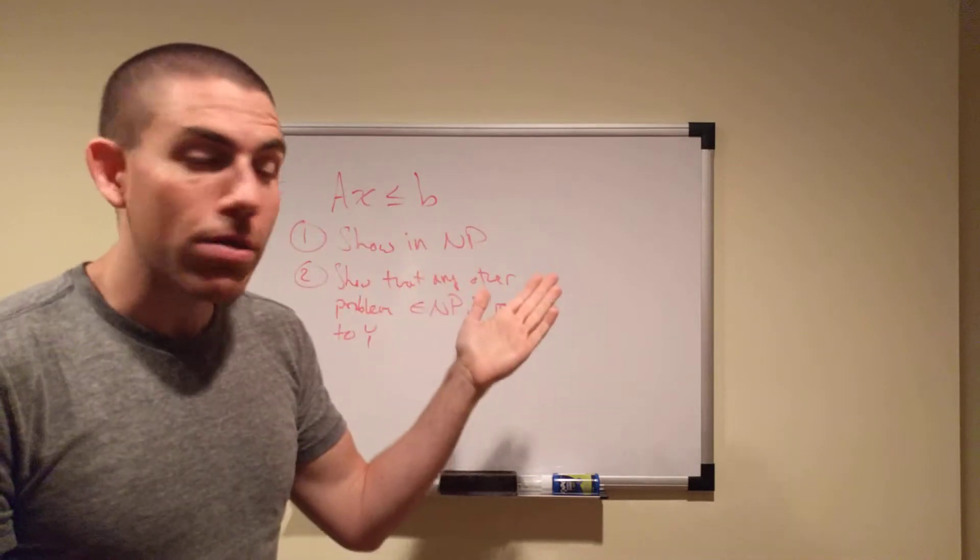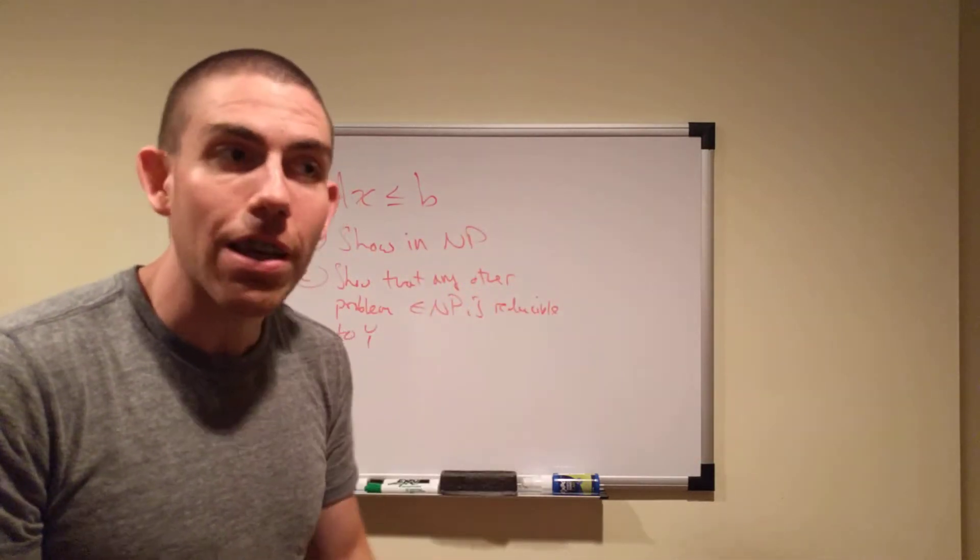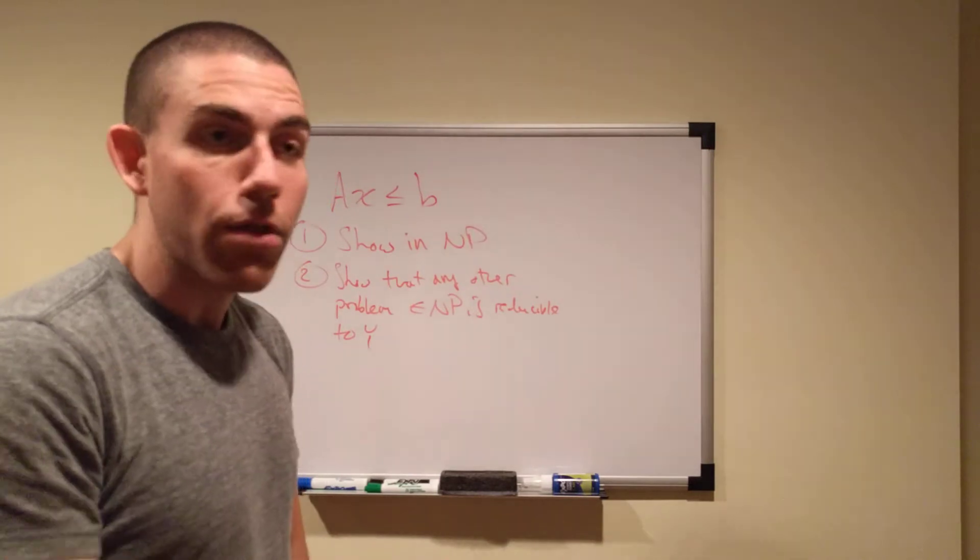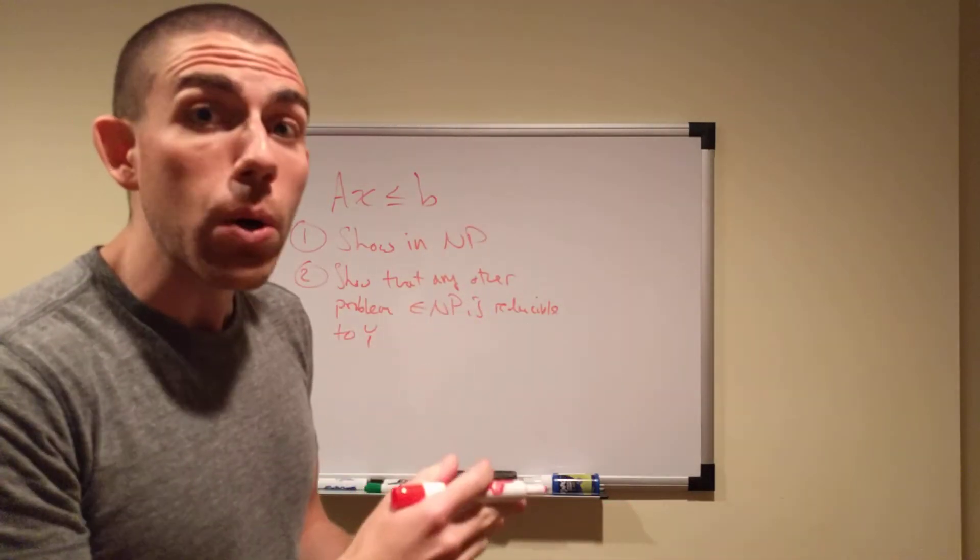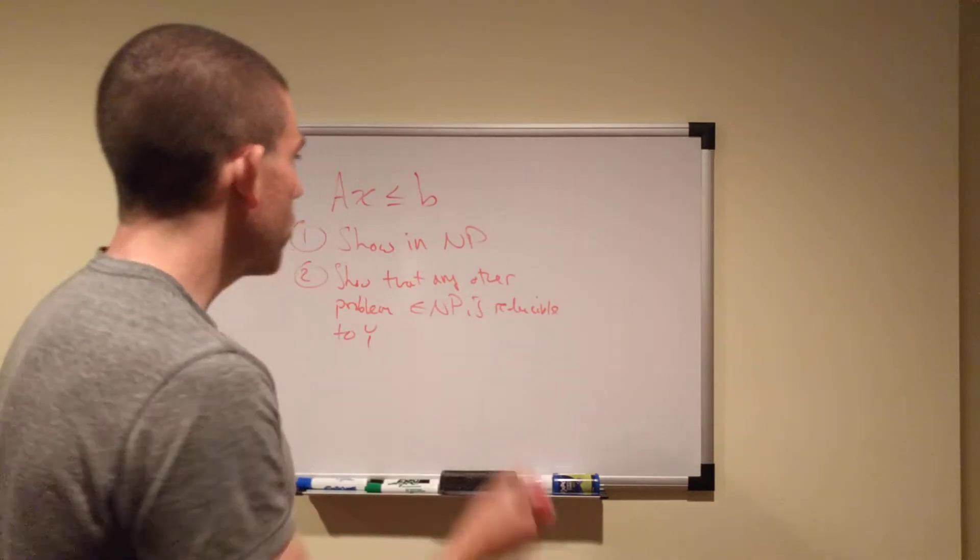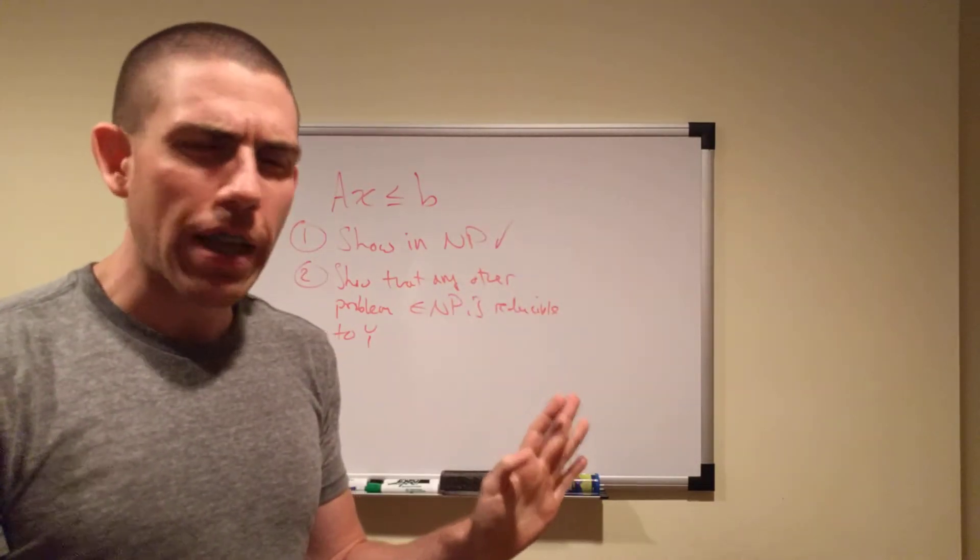Clearly, here it is, because I can propose a solution set to you, I can give you a set of x's and say, oh, this will work. And then if you can go test it in polynomial time and get a yes or a no, then it's in NP. So this is in NP. I hope everybody buys that.